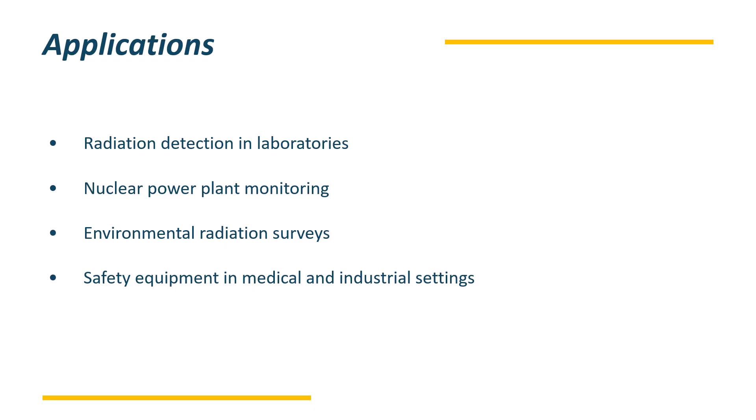GM counter is useful in various laboratories where there will be basic use of radioactive elements. It is also useful in the nuclear power plant where there will be the use of radioactive elements like uranium, plutonium. And as those are radioactive elements, they emit the radiations into the environment.